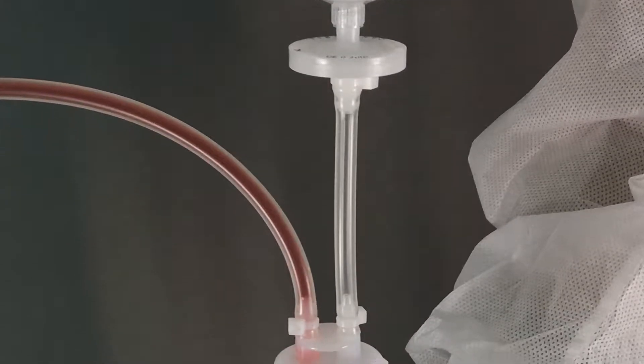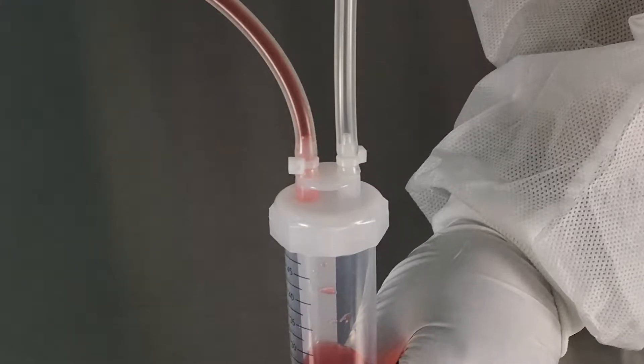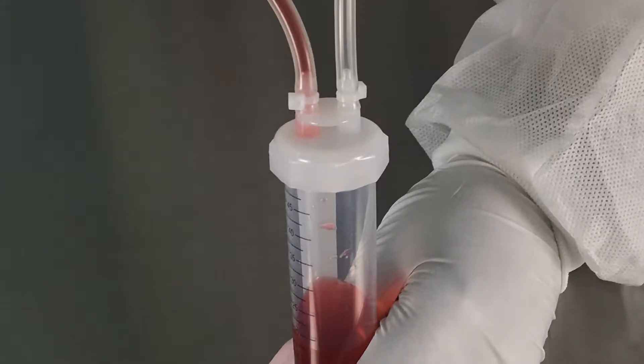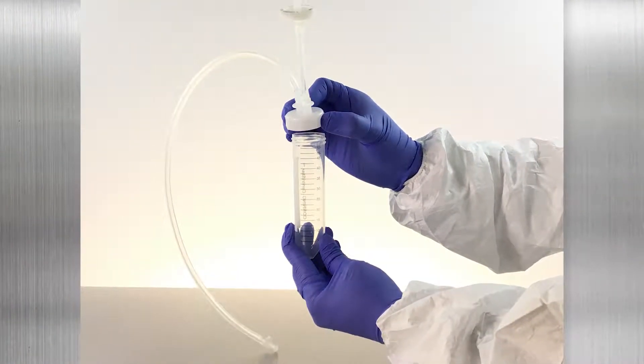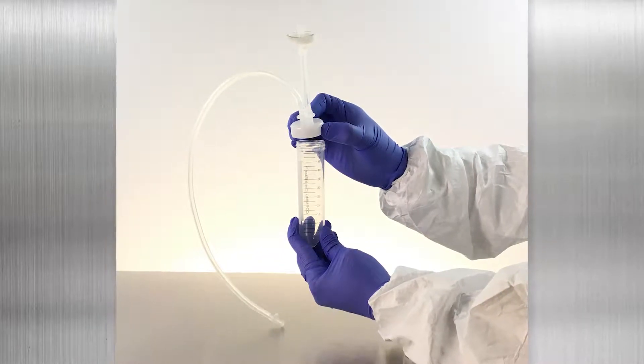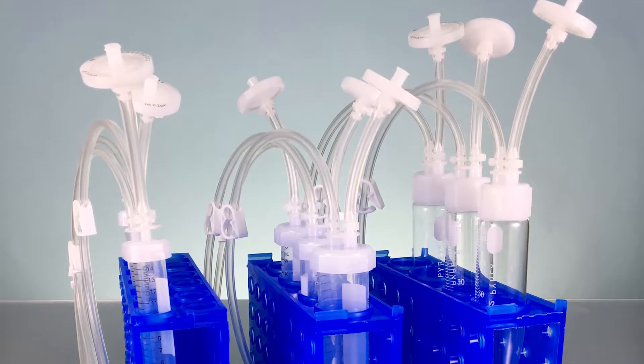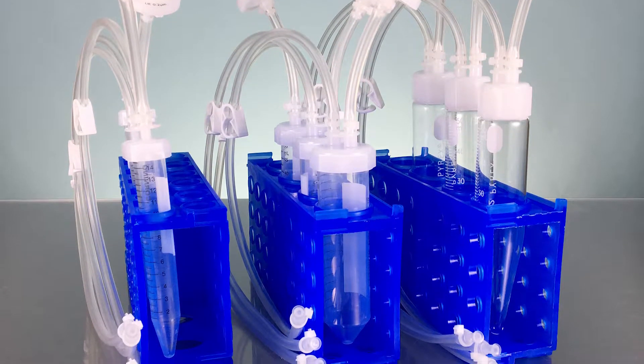VWR single-use Omnitop sample tubes are a first-in-class bioprocessing sampling system for performing sterile sampling and small fluid transfer. All standard Omnitop assemblies are built with 18 inches of thermoplastic tubing to create welds for sterile connections. Multiple standard configurations are available in both 15 or 50 mL sample tube sizes.